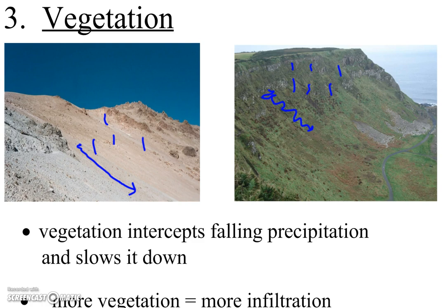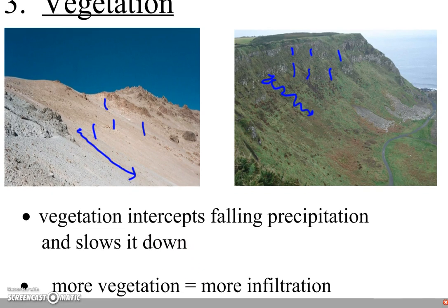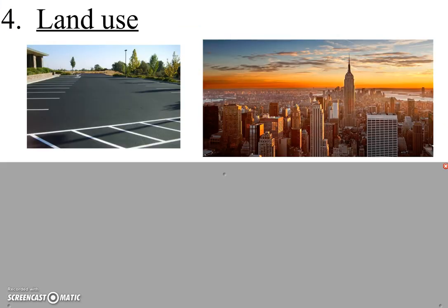So the more plants we have, the slower the water will go, and if the water goes slower you're going to get more of it infiltrating into the soil. If you stop and think about it — the water has to get around every blade of grass and every tree and every plant — the water is going to go much slower. The fourth and last factor we're going to look at in this video is land use. Humans do a lot of things to alter the land, and the choices we make when we build things affect the rate that water can infiltrate.